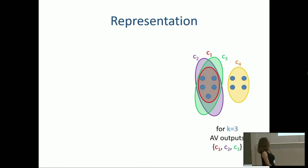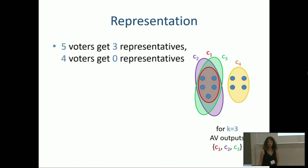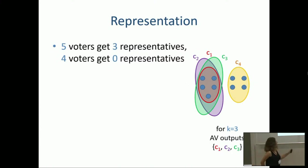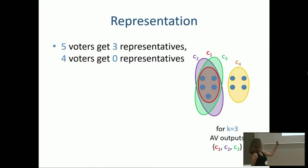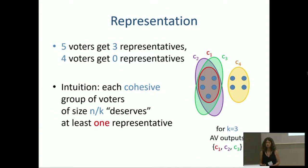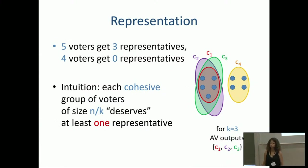Here, five voters get three representatives and four voters get zero representatives. Scale it up to one million and just under one million. Approval voting would just select the candidates approved by the voters on the left. The reason this is unfair is that intuitively, if you have K slots, then perhaps each group of size N/K deserves a representative.